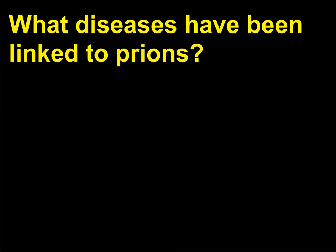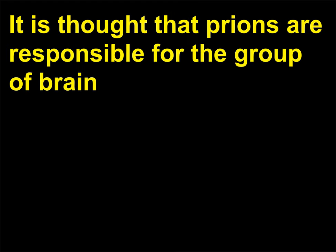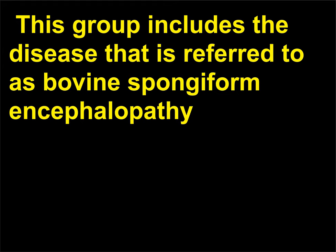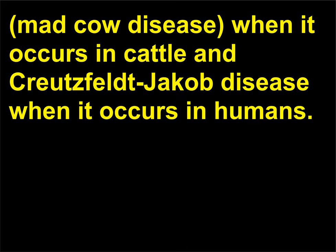What diseases have been linked to prions? It is thought that prions are responsible for the group of brain diseases known as transmissible spongiform encephalopathies (TSEs). This group includes the disease referred to as bovine spongiform encephalopathy — mad cow disease — when it occurs in cattle, and Creutzfeldt-Jakob disease when it occurs in humans.